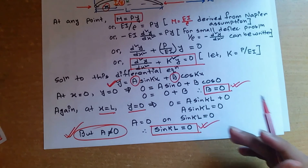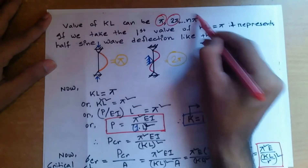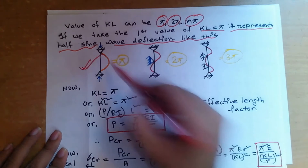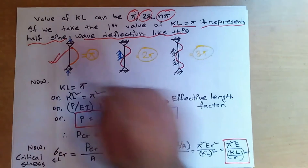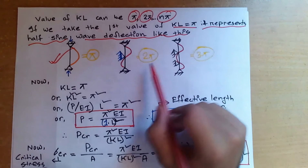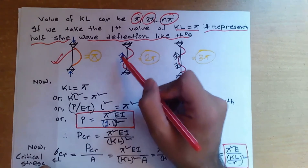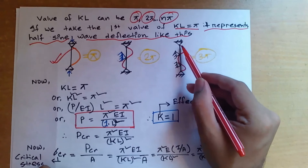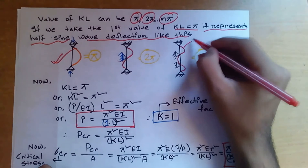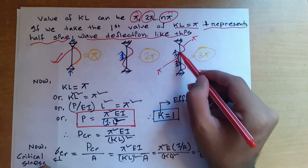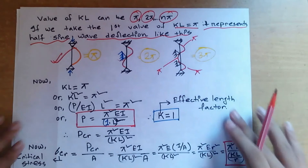Since sin(kL) = 0, the values of kL can be π, 2π, ... , nπ. If kL = π, it represents a half sine wave deflection — the column deflects in a single half-wave. If kL = 2π, the column deflects in a full wave, indicating an intermediate support at mid-span. If kL = 3π, it deflects in one and a half waves, indicating two intermediate supports in the column.